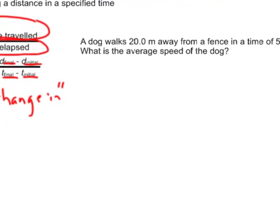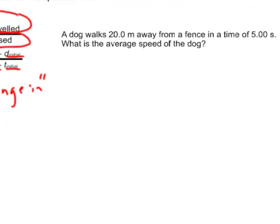So a simple example here: a dog walks 20.0 meters away from a fence in a time of 5.00 seconds. What's the average speed of the dog? Well, the speed is equal to the change in distance divided by the change in time.